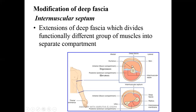These are called intramuscular septa. They divide the arm into a flexor compartment anteriorly and an extensor compartment posteriorly, separated by the medial and lateral intramuscular septa. The orientation of these septa differs in different regions of the body; in the forearm, the orientation is slightly different.